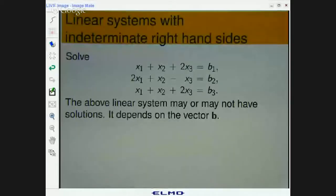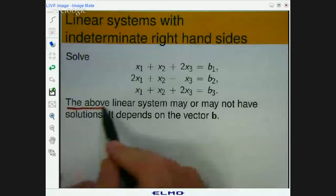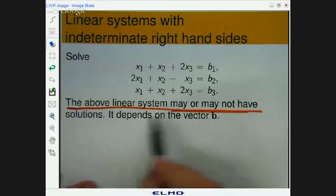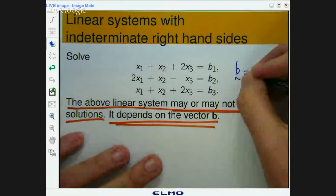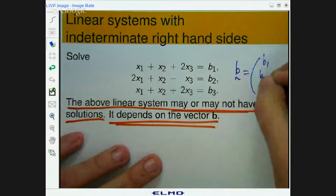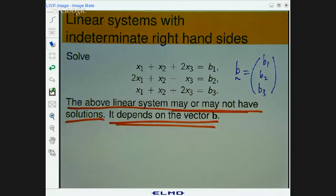Alright, we are asked to solve the following problem for x1, x2 and x3. Well, here is the interesting thing. This linear system may or may not have solutions and it depends on the right hand side. The values of b1, b2 and b3.